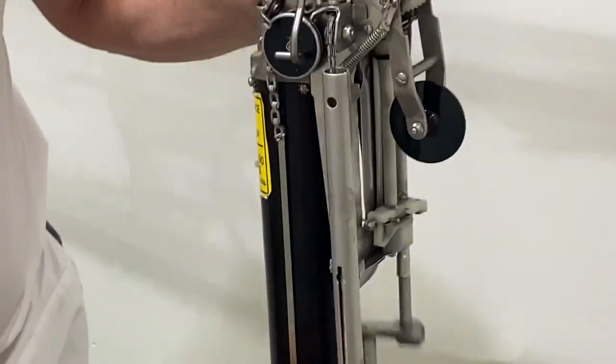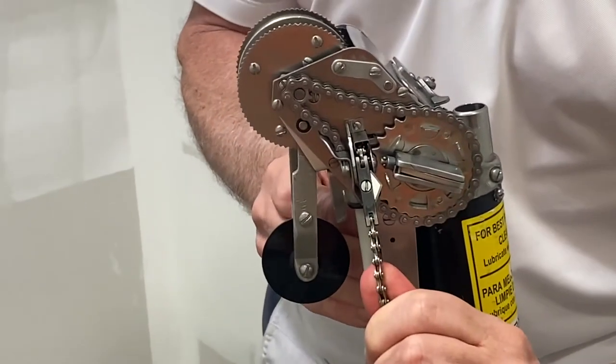Then what we want to do is release the spring, basically release the spring, the chain, pull the blade and the cutter block out the other side.